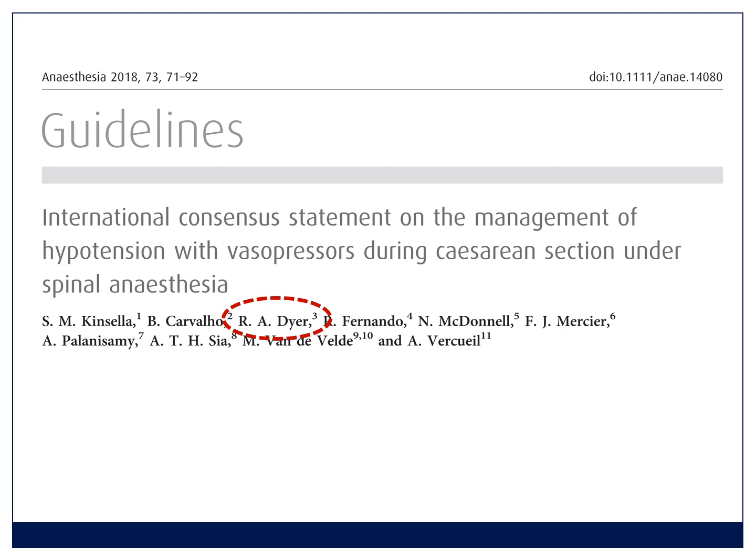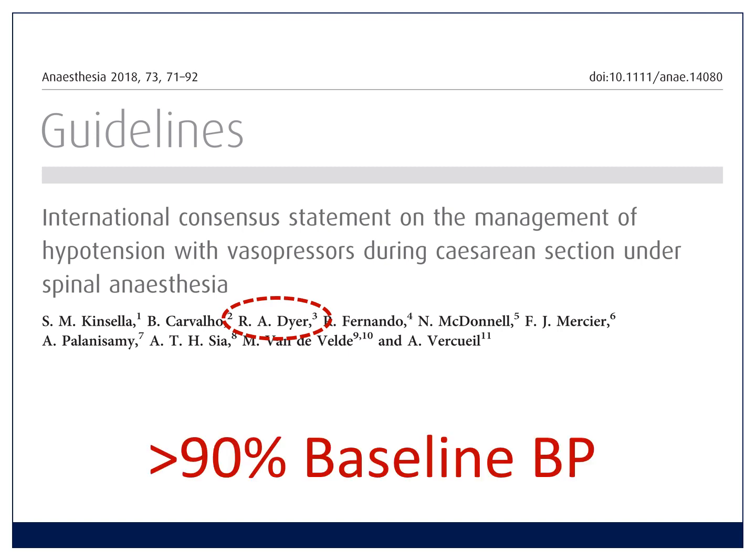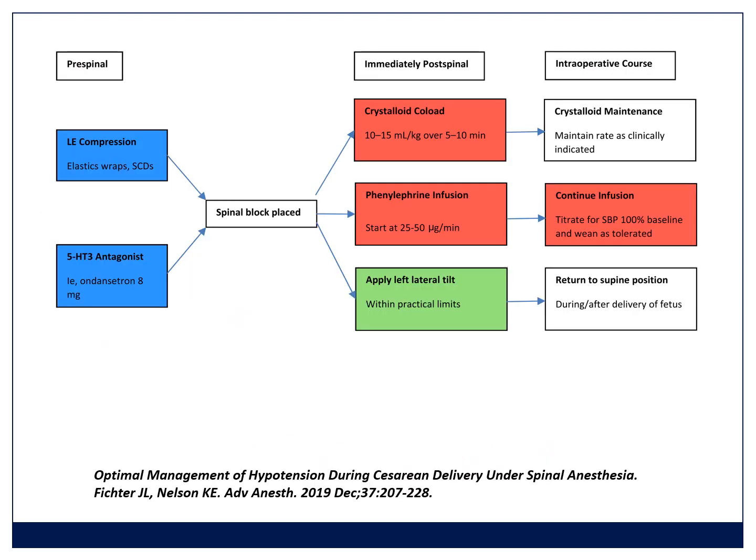The international consensus statement, which involves local author Professor Dyer, recommends you treat above 90% of the baseline blood pressure. Look at the systolic blood pressure when you take your first reading and aim to keep it at 90% of that baseline. This has led to complicated algorithms being released, but right at the heart of them is the recommendation to run a prophylactic phenylephrine infusion in all patients. So ask yourself: are you doing that? And if you aren't, why aren't you? It's in the guidelines and is considered the gold standard.